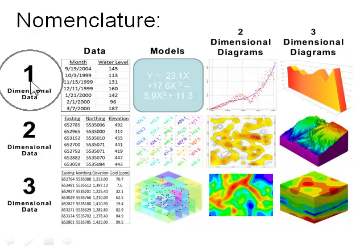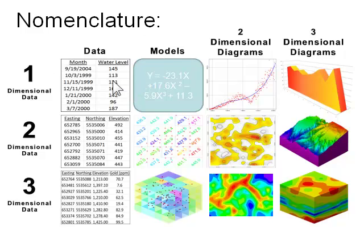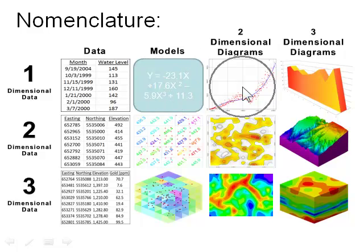One-dimensional data refers to data that has one independent variable and one dependent variable. For example, if we're sampling water levels at a given well over time, we can think of the date as the independent variable and the water level as the dependent variable. For any given time, there can be one and only one water level. This data can be modeled with a polynomial equation, and it can be plotted as a two-dimensional graph or a pseudo three-dimensional diagram.